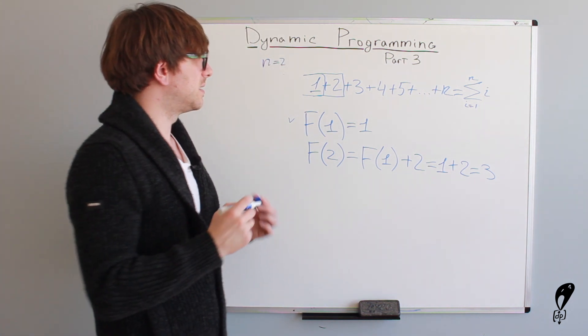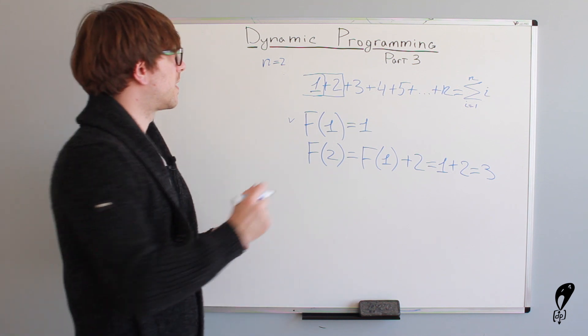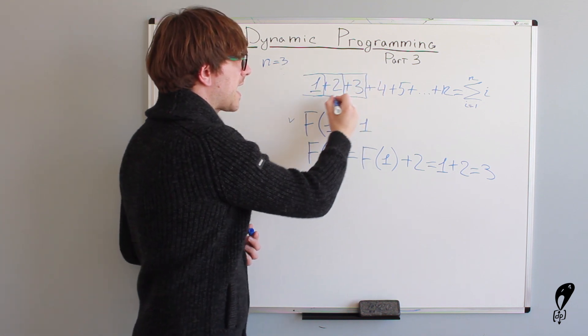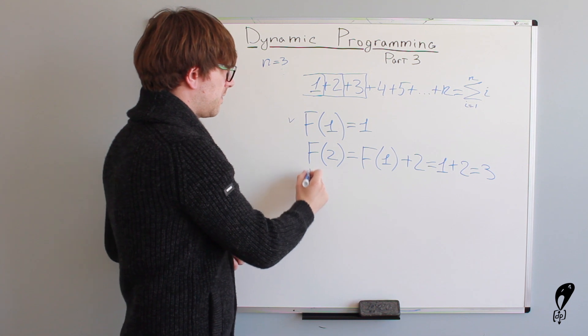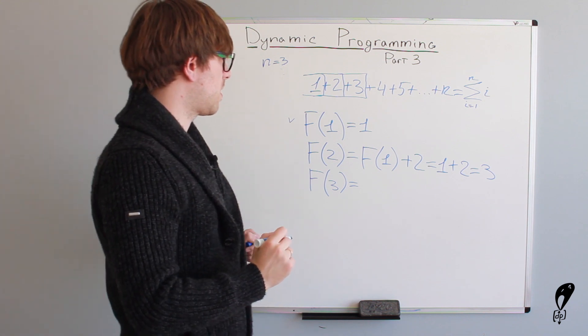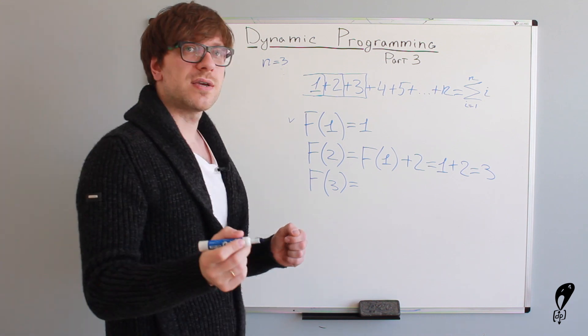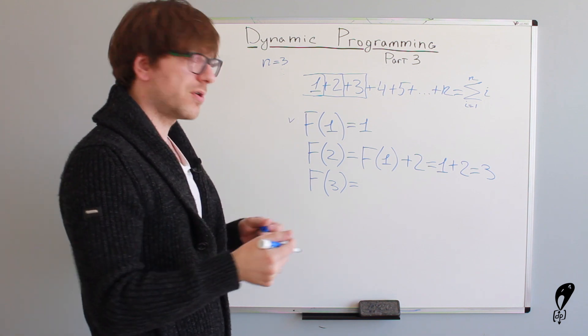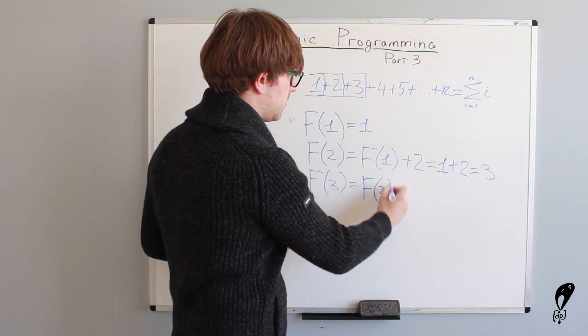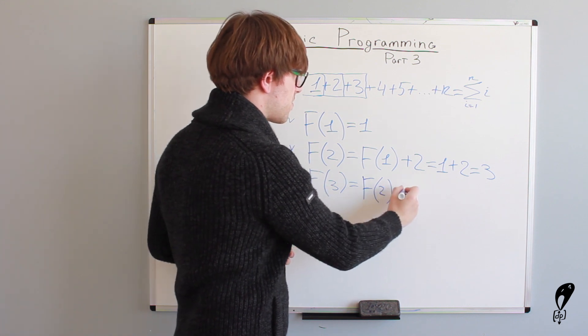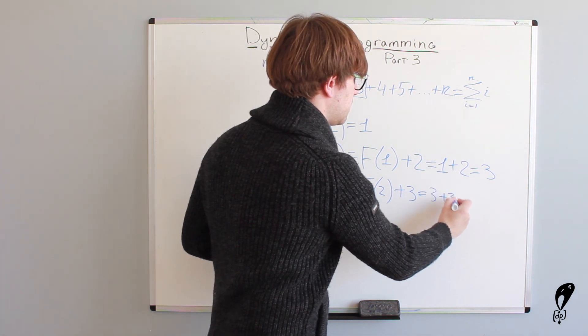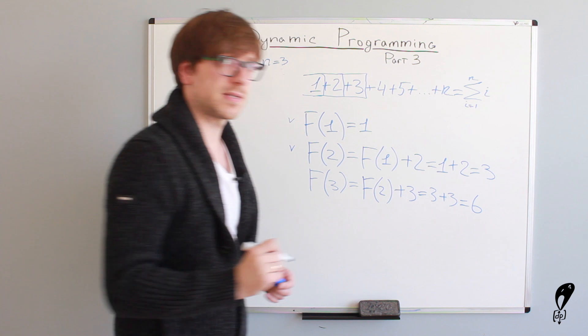Now, let's see how can we calculate the sum for three elements. For the first three elements, n equals to 3. It's exactly the same process. We define f of 3 and as we've just said, to calculate the sum of three elements, we need to take the sum of the previous two elements and add the third element to it. So, we take the sum of the first two elements, it's f of 2, and we add the third element to it, f of 2 plus 3 equals 3 plus 3 and this equals to 6.